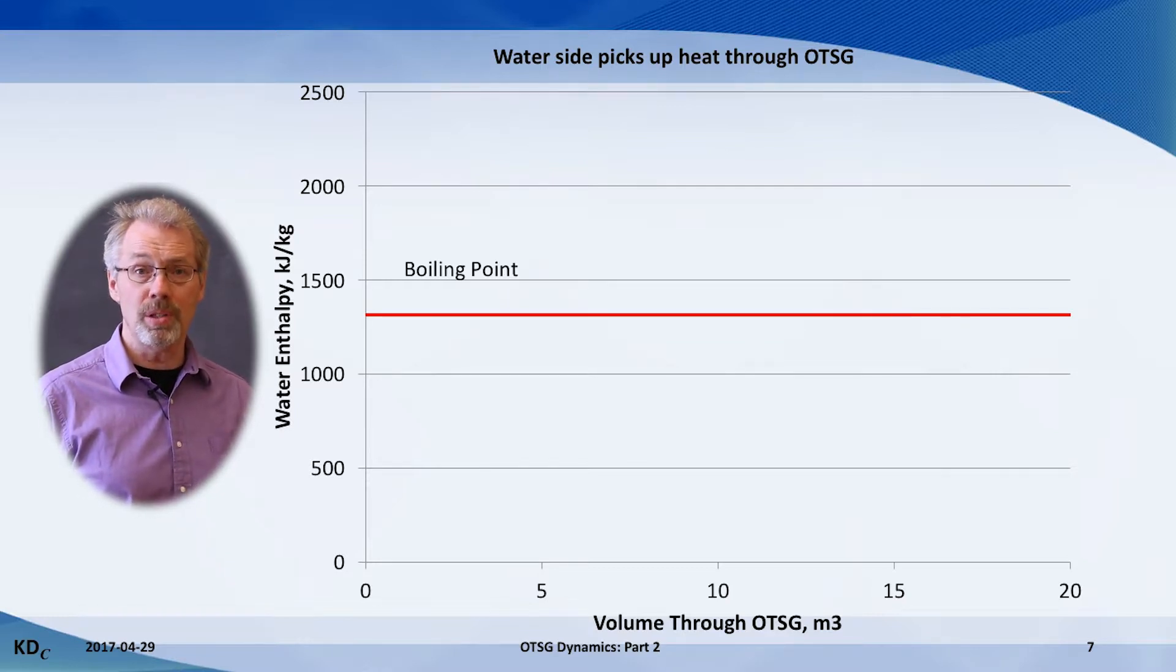On the vertical axis is the enthalpy, or the heat content of the material. The fluid enters the OTSG at 600 kilojoules per kilo, or about 150 degrees Celsius. As the fluid creeps through the convection section, it picks up heat from the hot flue gas, and the water gets warmer.